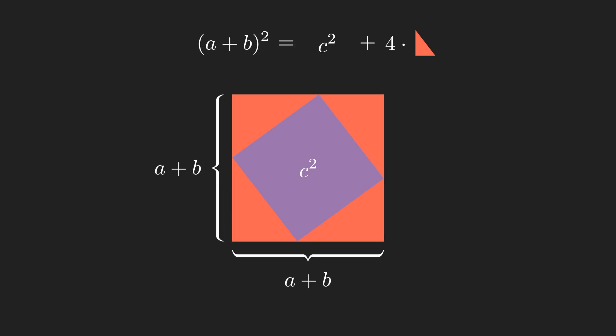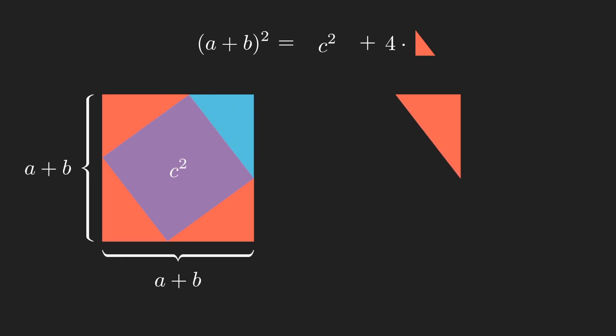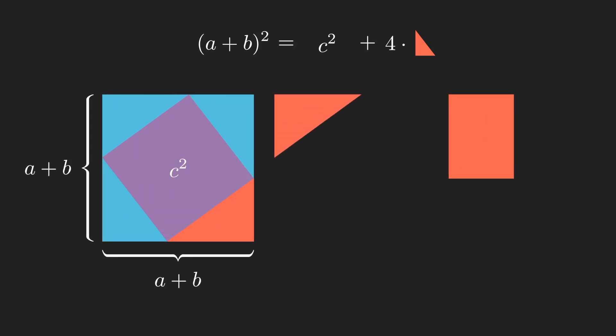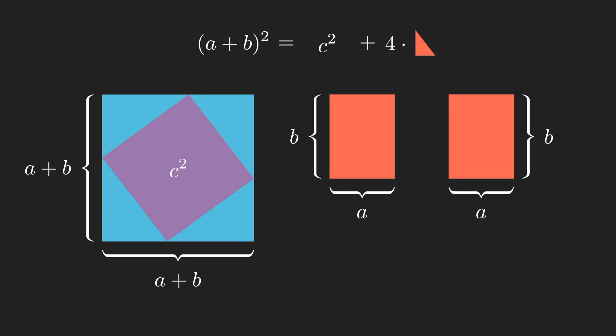Our four triangles seem more difficult. Let's try lining them up as rectangles. By doing this we can see that the area of our four triangles is the same as that of two rectangles with sides A and B.